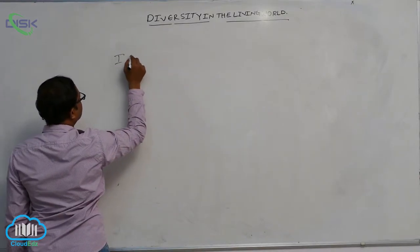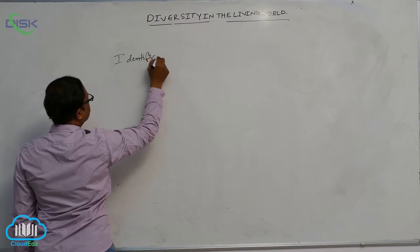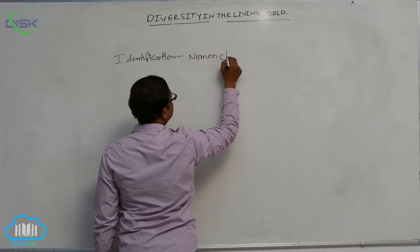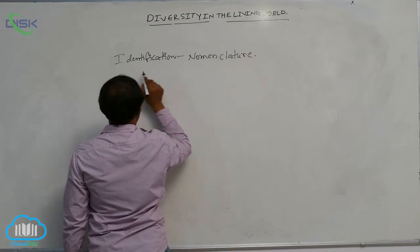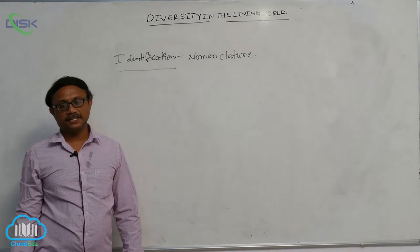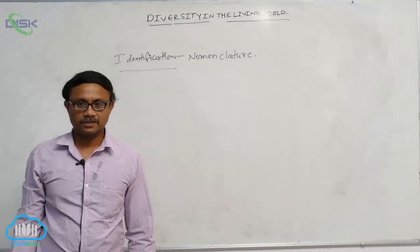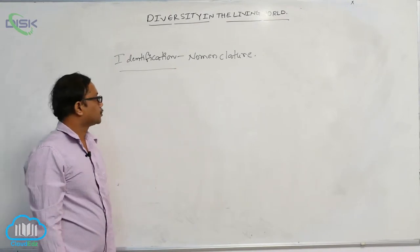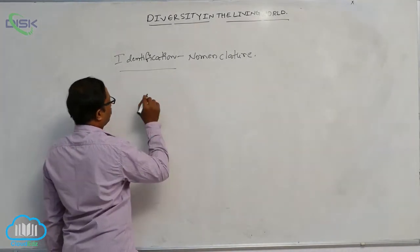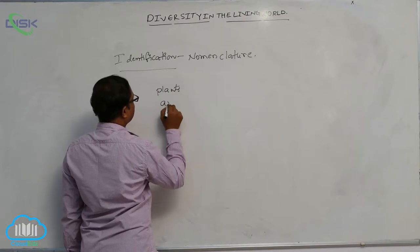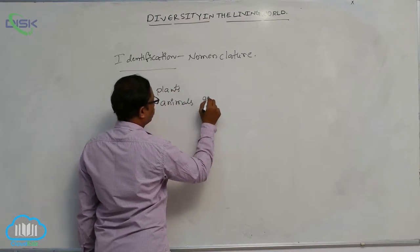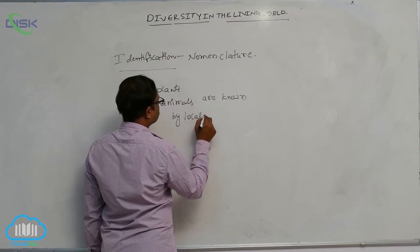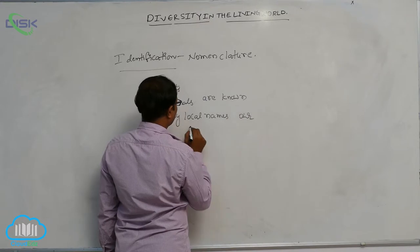After that, identification and nomenclature. For example, we know that plants and animals in our own area — it means in our surroundings — by their local names. Plants and animals are known by local names in our surrounding area.